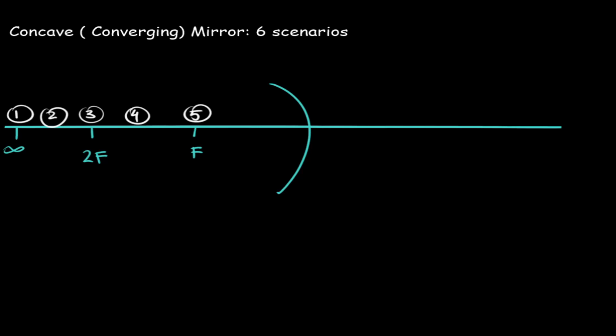Next, you want to draw a one underneath the focal point, a two in between our 2f and f, a three at 2f, a four in between infinity and 2f, and a five at infinity. The numbers on the top represent where we will place our object, and the numbers at the bottom represent where each image will form.